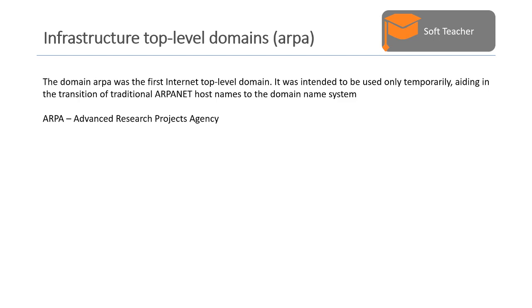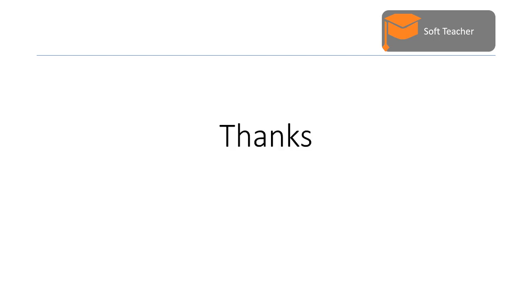The third one is infrastructure top level domain: ARPA. The domain ARPA was the first internet top level domain; it was intended to be used only temporarily, aiding in the transition of the traditional ARPANET host names through the domain name system. The acronym ARPA stands for Advanced Research Projects Agency. Thank you all for watching this video.